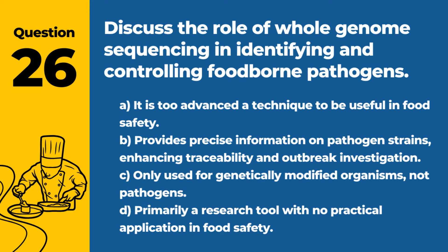Question 26. Discuss the role of whole genome sequencing in identifying and controlling foodborne pathogens. a. It is too advanced a technique to be useful in food safety. b. Provides precise information on pathogen strains, enhancing traceability and outbreak investigation. c. Only used for genetically modified organisms, not pathogens. d. Primarily a research tool with no practical application in food safety. Answer: b. Provides precise information on pathogen strains, enhancing traceability and outbreak investigation. Whole genome sequencing is a powerful tool for improving food safety management.